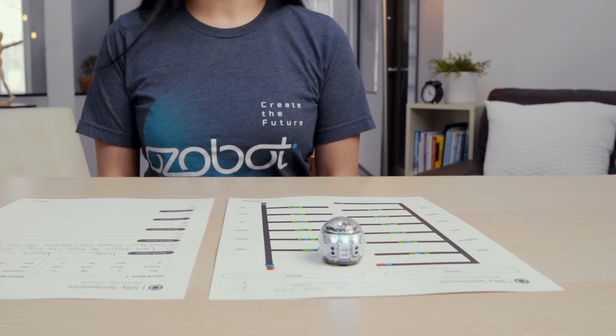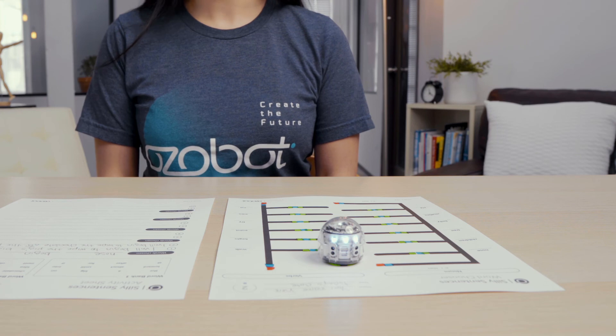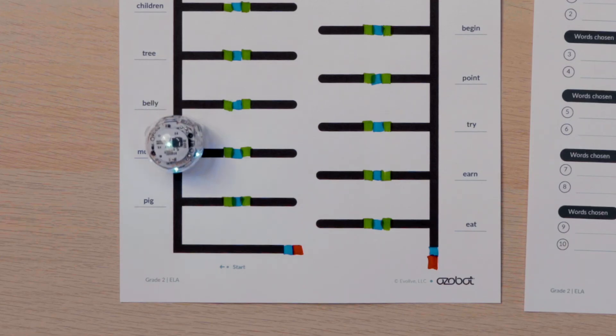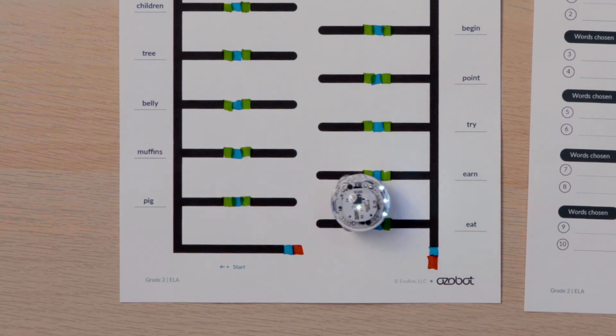Complete your activity sheet by running your Ozobot on the word chooser four more times. Each time you run your Ozobot, let it choose two nouns and a verb. Then use the words to write two sentences.